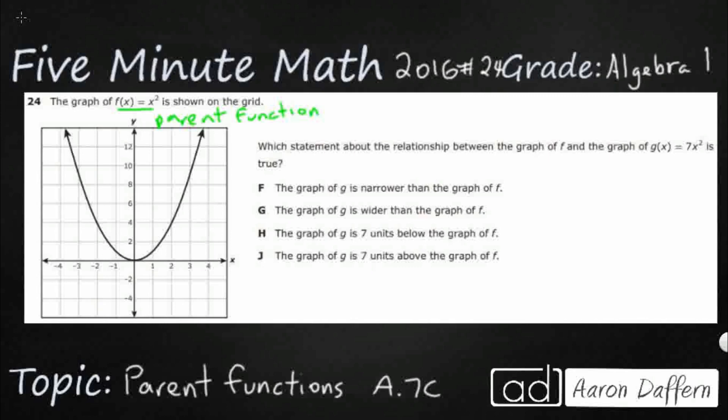And then what we do with these parent functions is we start modifying them in some way. So the relationship between the graph of f which is shown and then g(x)—look at the difference between g(x) and f(x). So f(x) = x². Here's my difference. We've got a multiplier in front of that x squared, that 7. So what is going to happen with that?